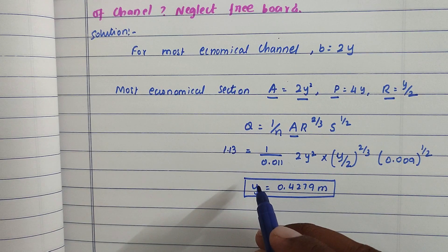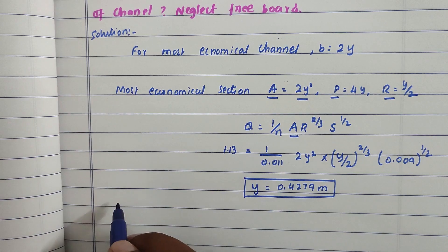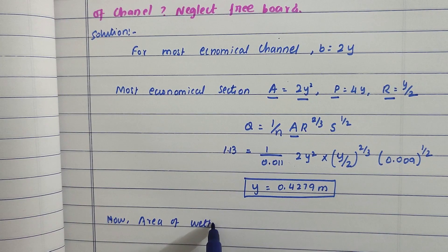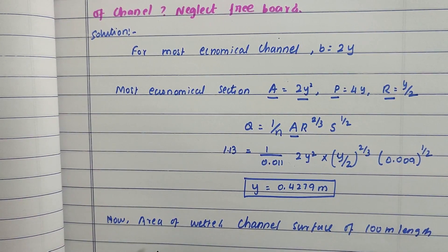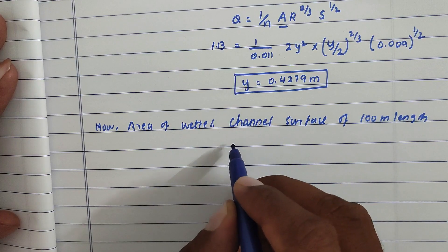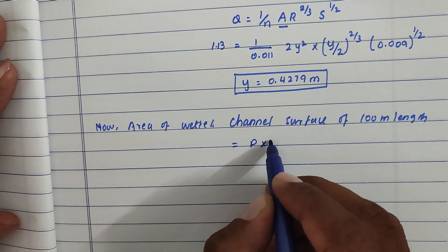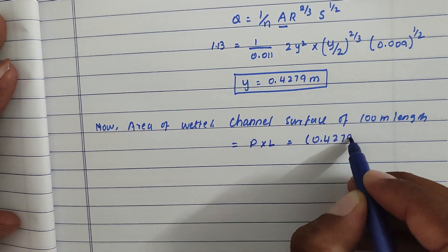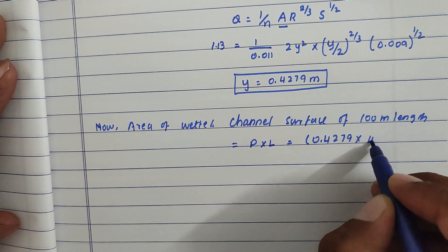Now we need to find the area of wetted channel surface for 100 meter length. The formula is P into L. The P value is 4 times 0.4279.